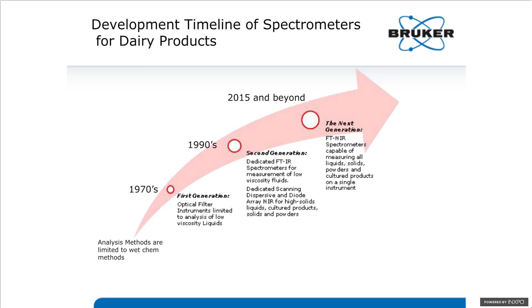The first generation of instruments that used spectroscopic techniques for analyzing milk were optical filter instruments, and they were really limited to the analysis of whey samples and milk samples. Between the 70s and 90s, there were many papers trying to use dispersive infrared spectrometers to quantitate protein, fat, lactose, and total solids in milk, but those efforts were marginally successful — mainly not having the precision and accuracy necessary. This was mostly due to scans taking a long time, poor wavelength accuracy, and insufficient signal-to-noise ratio.